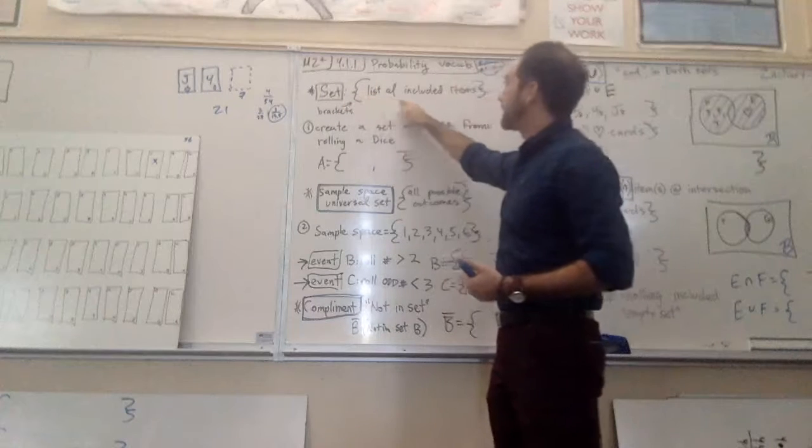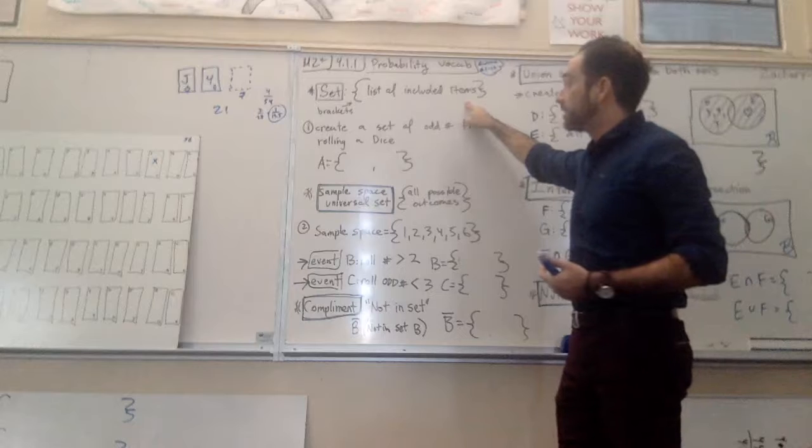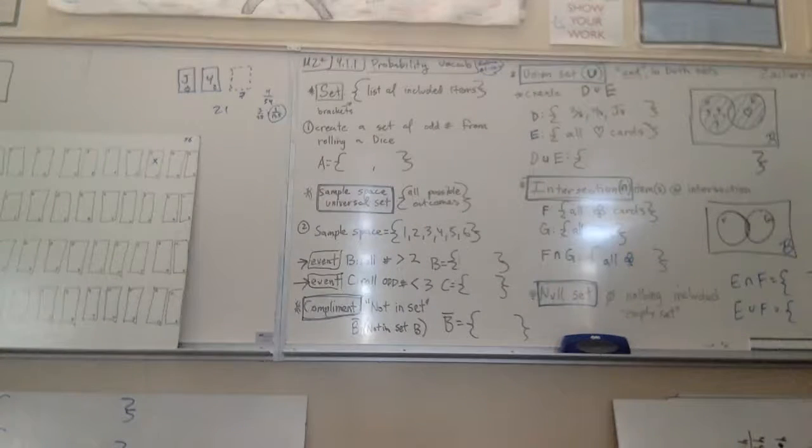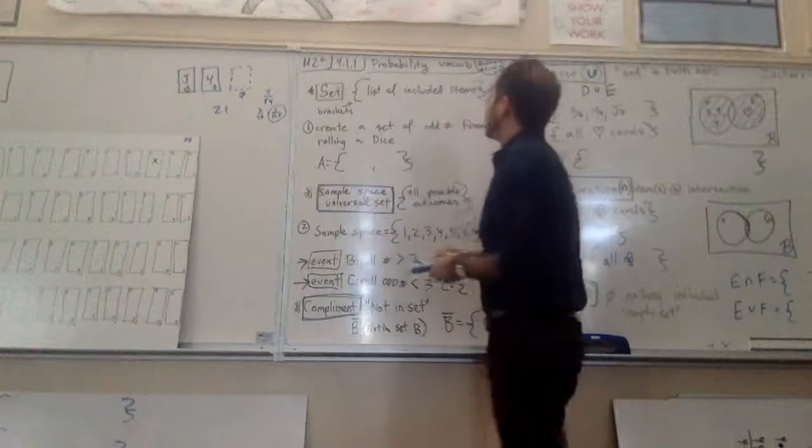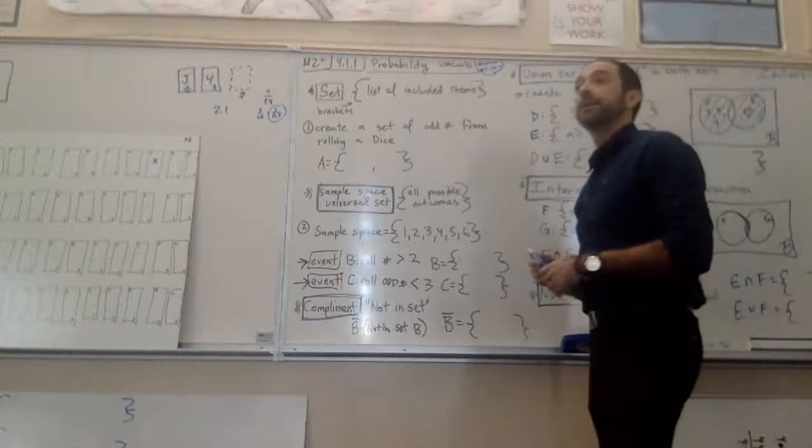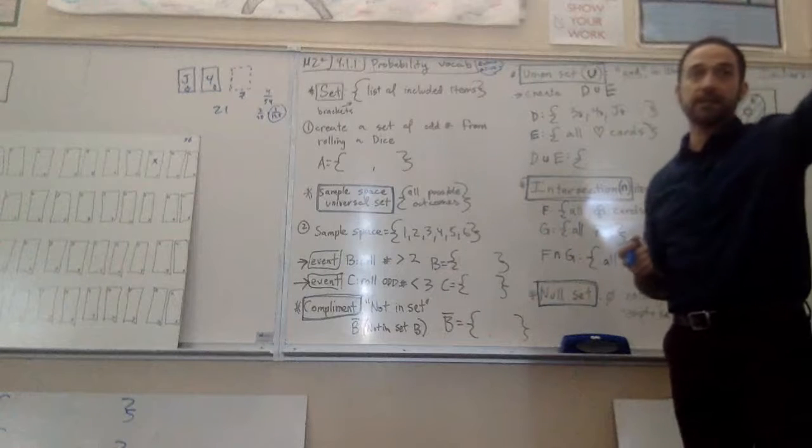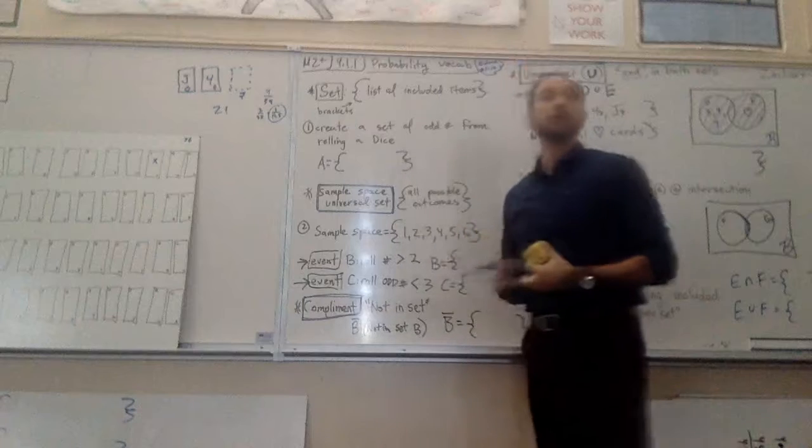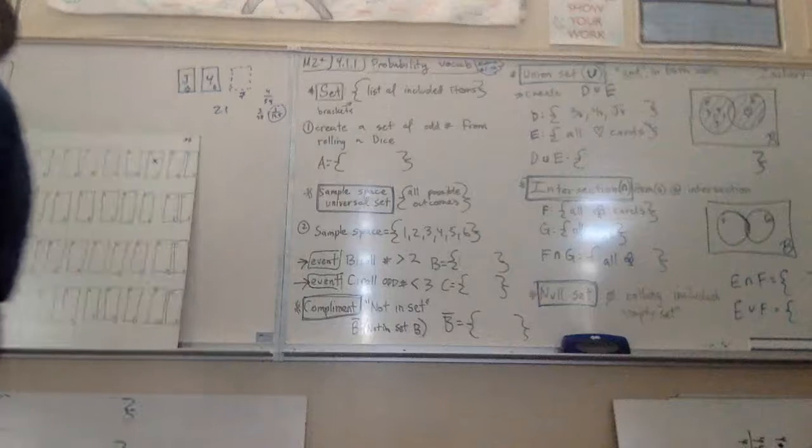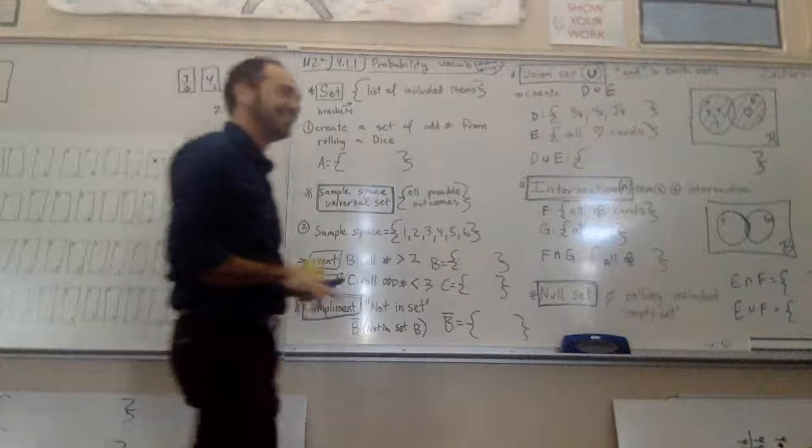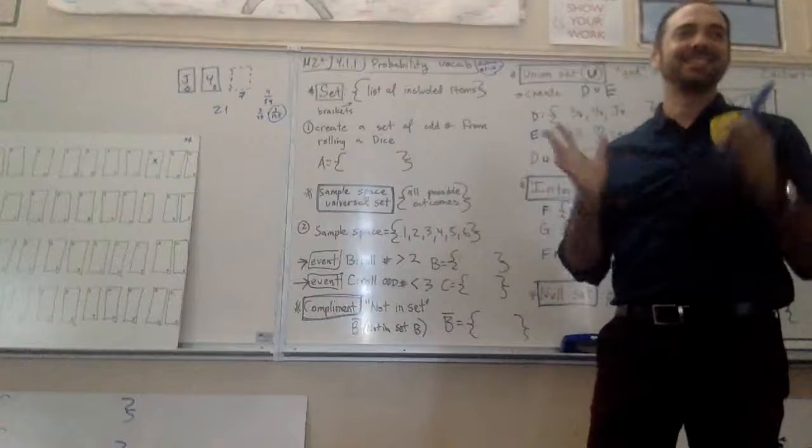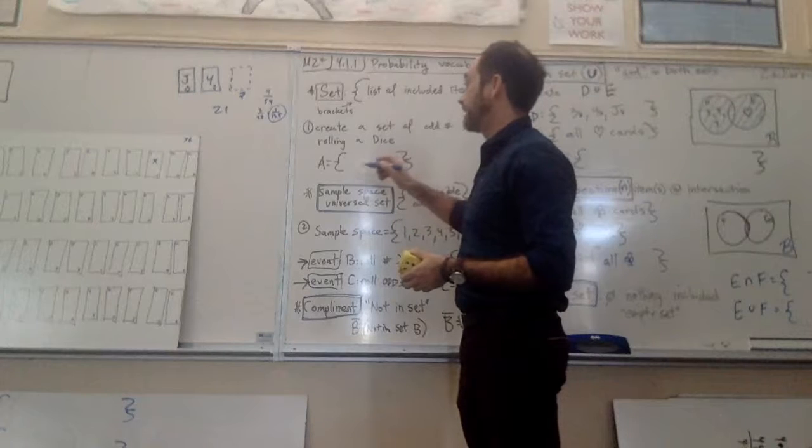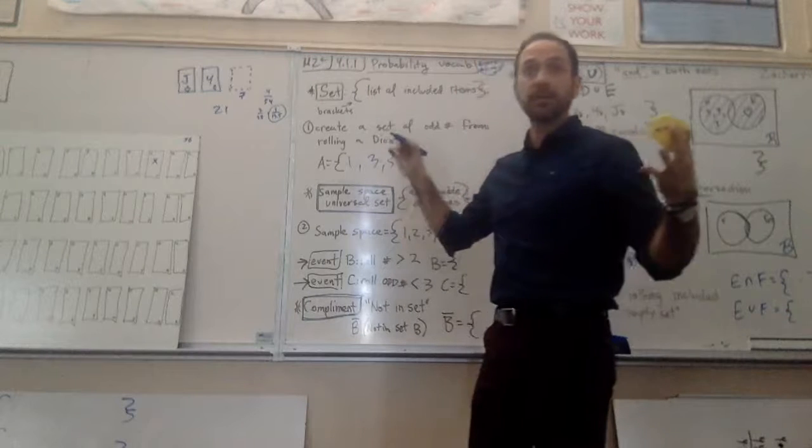A set is just with these brackets and it lists all included items. So I want you to create a set of odd numbers from rolling a six-sided dice. So we got six-sided dice here. I want you to make a set, make a new set, we'll call set A of odd numbers from rolling the dice. Go ahead and fill that in really quick and then check with your neighbor. So we need odd numbers from rolling the six-sided dice. Yeah, check with your neighbor. What are all our odd numbers on the dice?